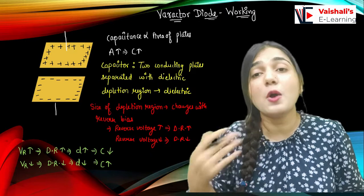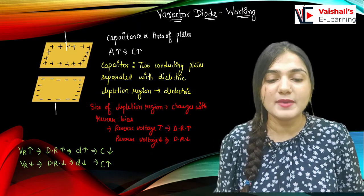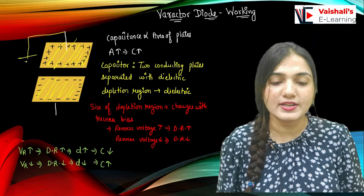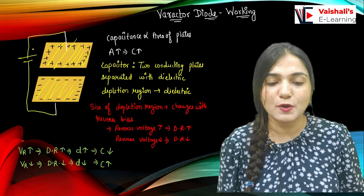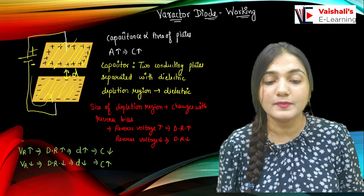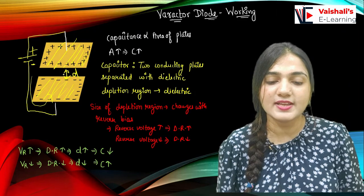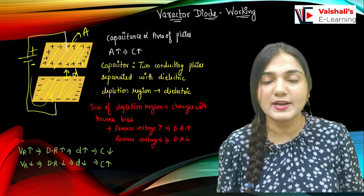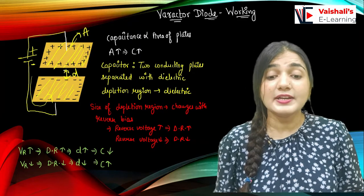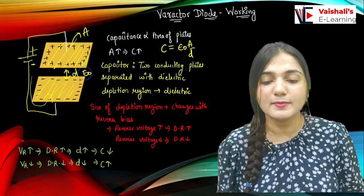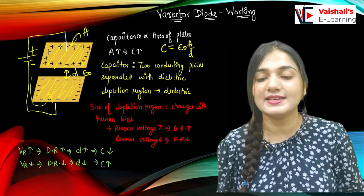Now let's understand practically how it works. In a capacitor, we have two conducting plates separated by a dielectric. We apply some voltage — positive terminal on one side, negative terminal on the other. Electrons occupy one conducting plate, giving a negative charge deposit, and the other plate has a positive charge deposit. The capacitance is given by ε₀A/D, where A is the area of the plates, D is the distance between them, and ε₀ is the permittivity of the dielectric medium.